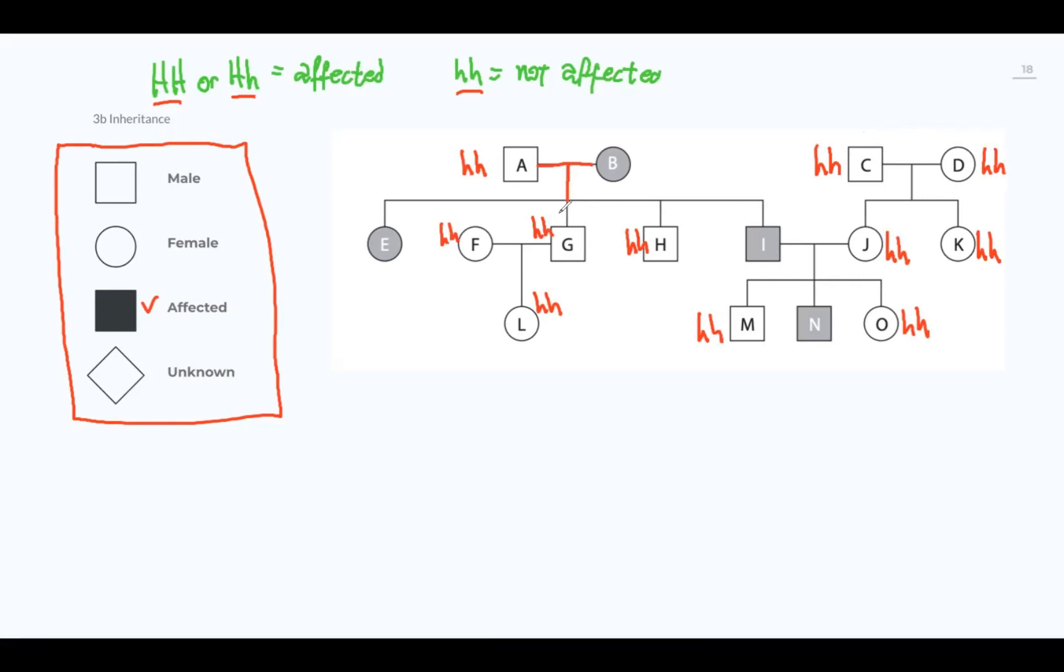What else do I know about this family? Well, I know that these people here, marked in gray, they are affected. Now, they can either be double h, double big h here, big h, big h, or big h, small h. They can be homo dominant, or they can be heterozygous.